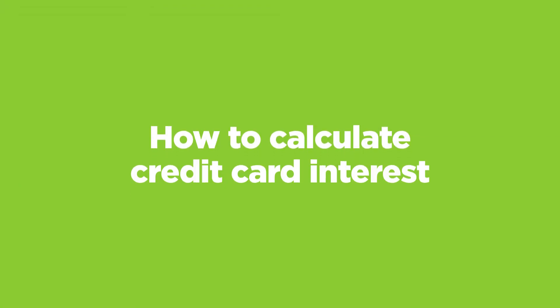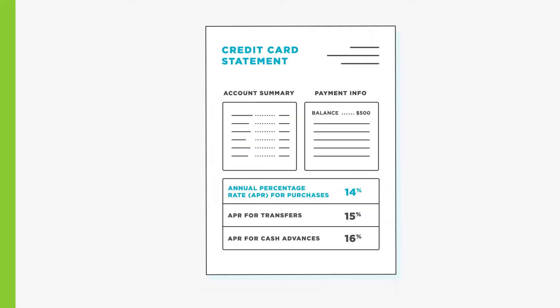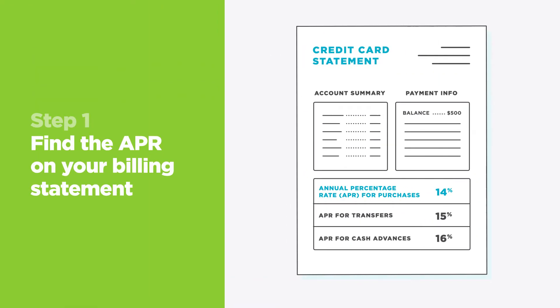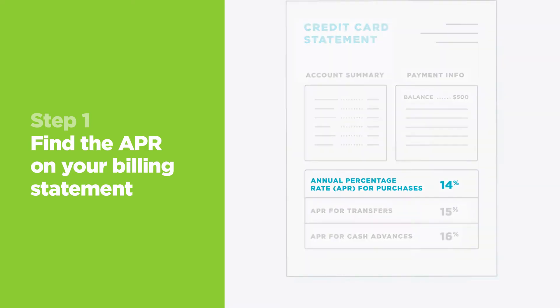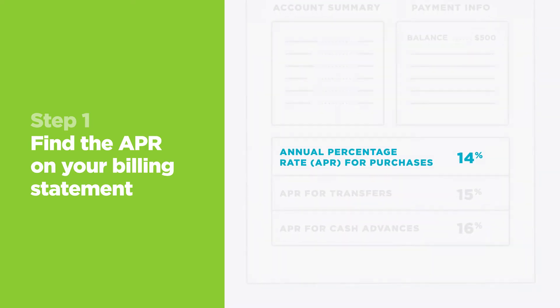Confused by credit card interest? Here's how to calculate it. Step 1: Find your credit card's APR, or annual percentage rate, on your billing statement.